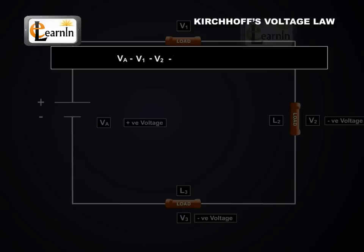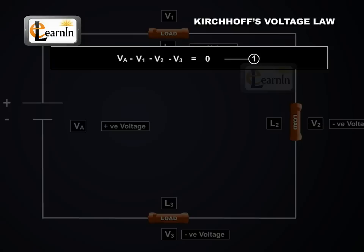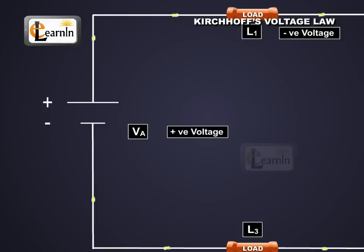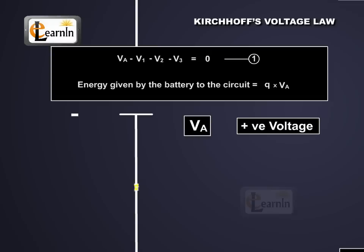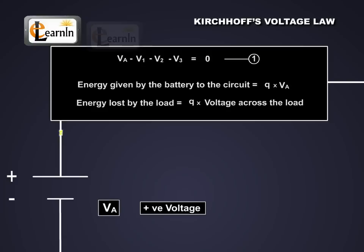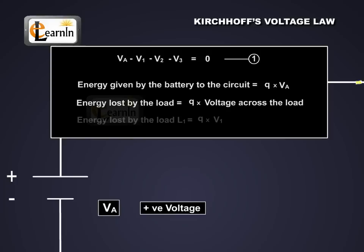To further understand how Kirchhoff's Voltage Law works, we need to imagine that a charge Q is flowing through the closed network. Since the battery is giving energy to the circuit, the charge Q picks up an energy equal to Q times VA as it moves through the battery. As the charge goes through the loads, this energy is consumed.